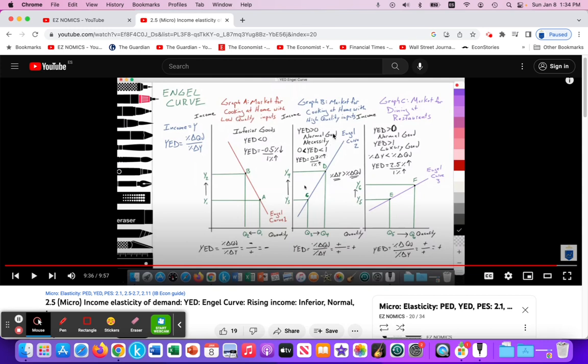Then there'll be another video calculation for cooking at home with higher quality ingredients. And on the third video, calculating the household spending on dining in restaurants as a luxury good as a result of a change in income.